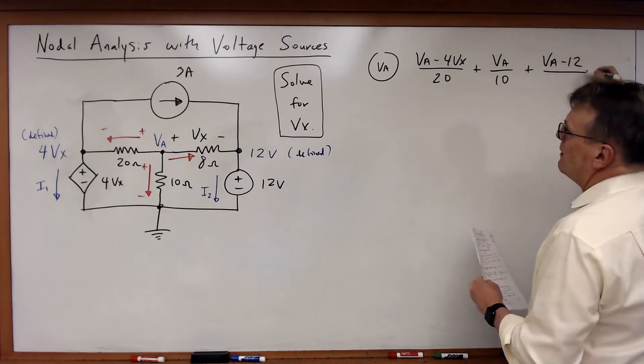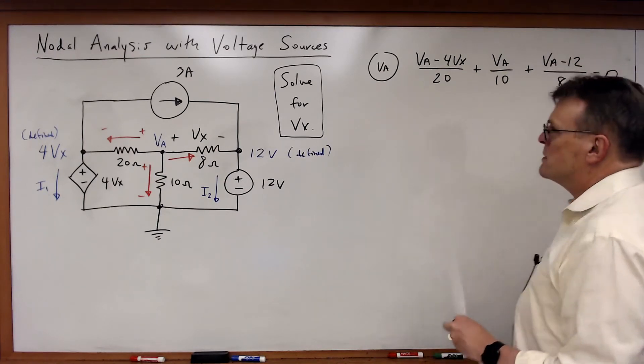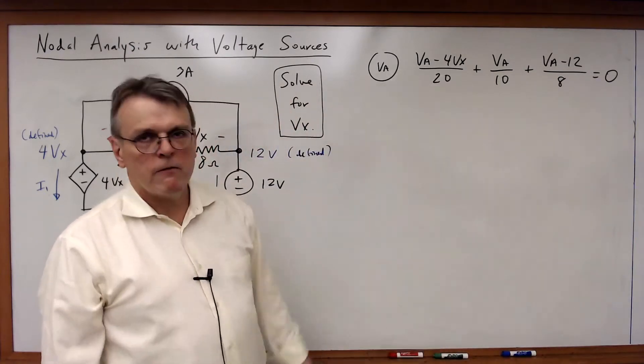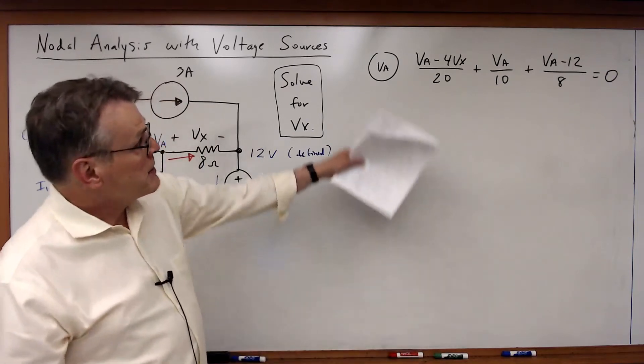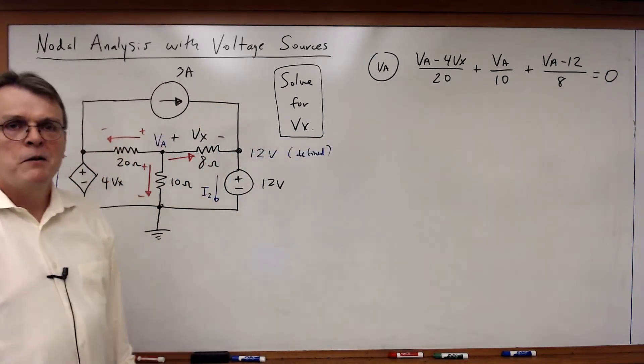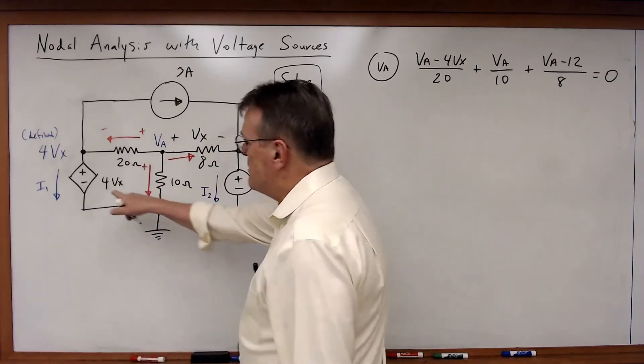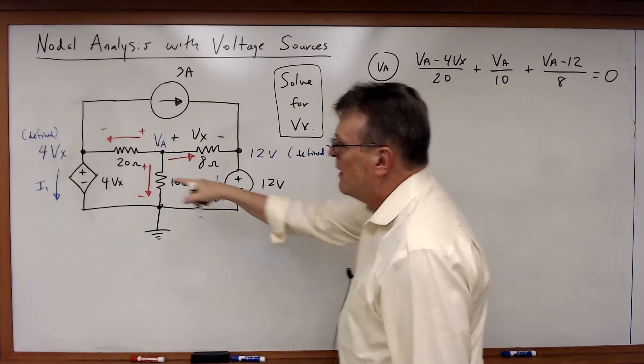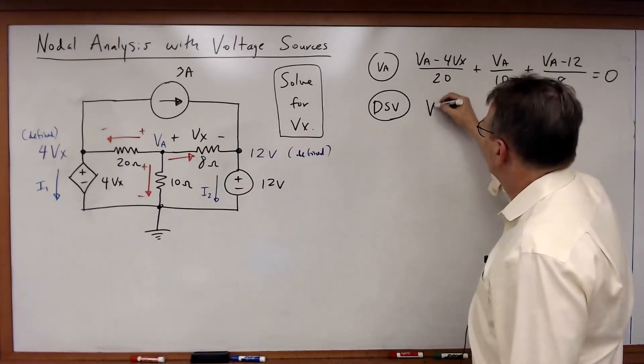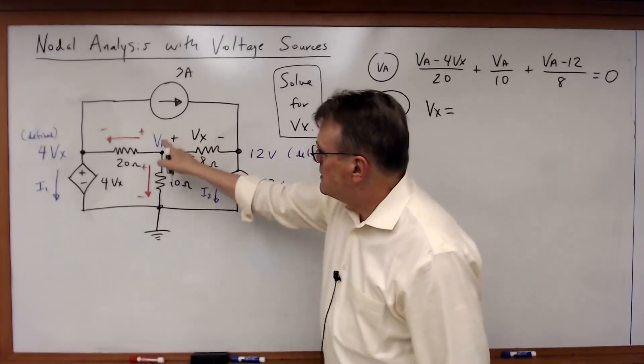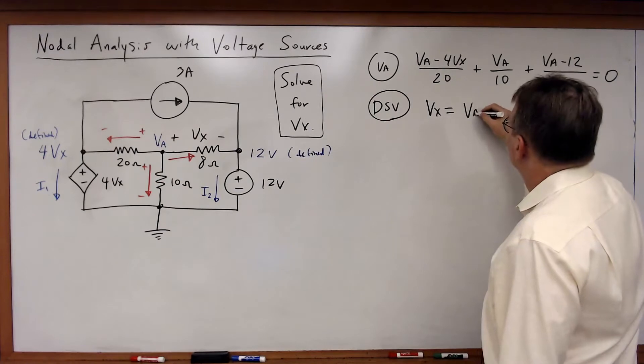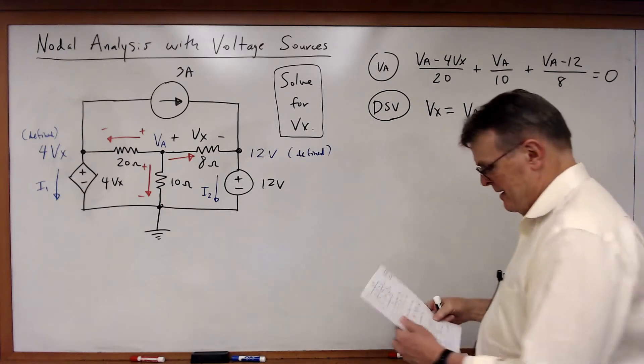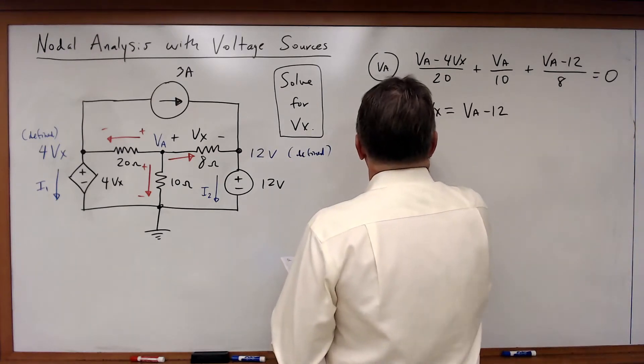That's the only KCL equation we need to solve for VA, but it's still not enough because I've got a second variable Vx. So what else do I need? I've got a dependent source, therefore I need a dependent source variable. What is Vx? Vx by inspection is VA - 12. Now I've got two equations, two unknowns, and I can solve.